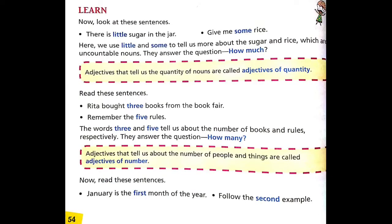Open page number 54. Look at these sentences: There is little sugar in the jar. Give me some rice. Here, we use little and some to tell us more about the sugar and rice, which are uncountable nouns. They answer the question, 'How much?' Adjectives that tell us the quantity of nouns are called adjectives of quantity.